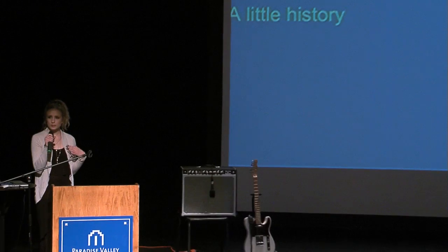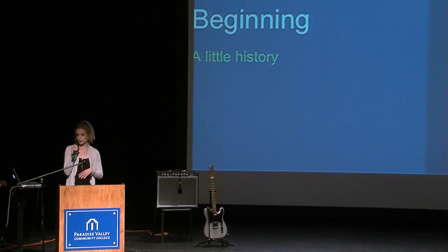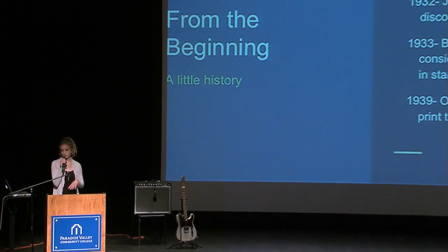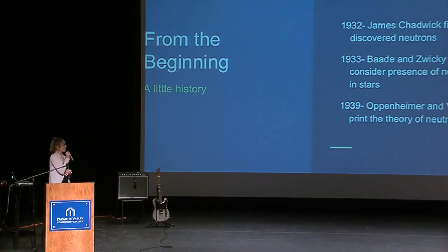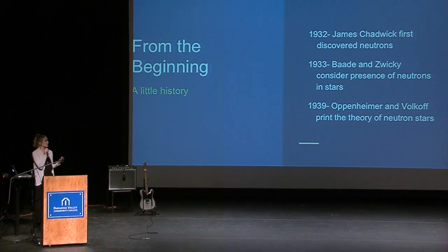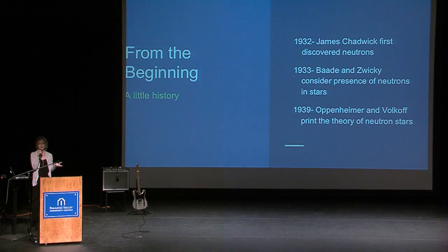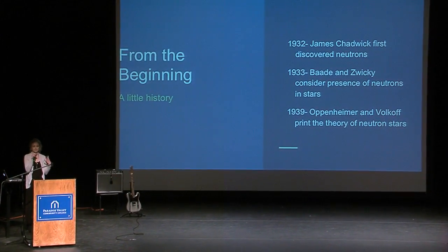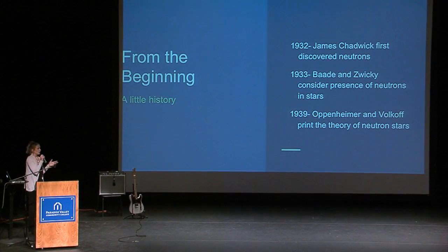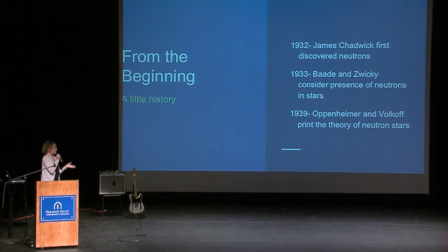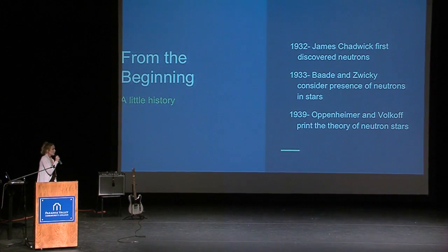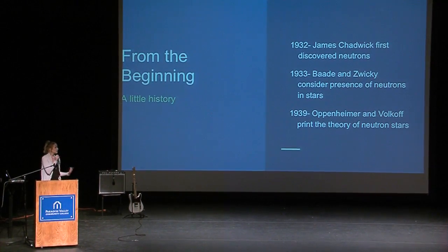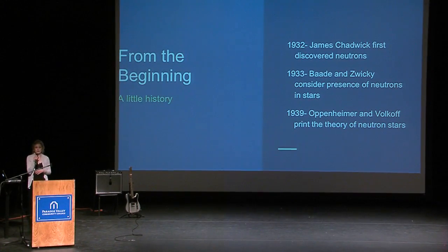So from the beginning, just a little history. My research actually goes back all the way to 1932 when James Chadwick first discovered neutrons. A year later, Bade and Zwicky actually considered the presence of neutrons in stars. Their information on stars and telescopes wasn't great back then, but it ended up further progressing. In 1939, Oppenheimer and Volkoff then published the theory of neutrons in stars.